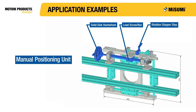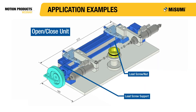In this application, the combination of a hand wheel, lead screw, and position lock are used to allow manual positioning for a fixture. In this case, instead of allowing free positioning of the fixture, the use of a lead screw allows accurate positioning, reducing the amount of time required to position it. Once in position, it can be locked into place using the hand lock.